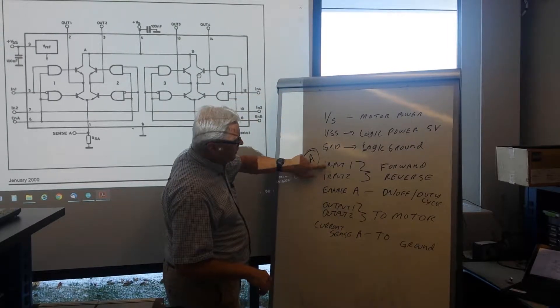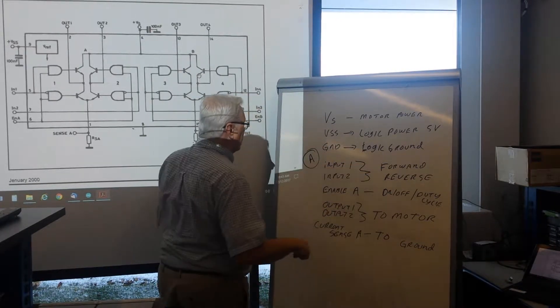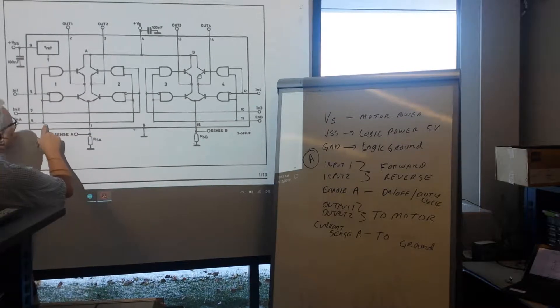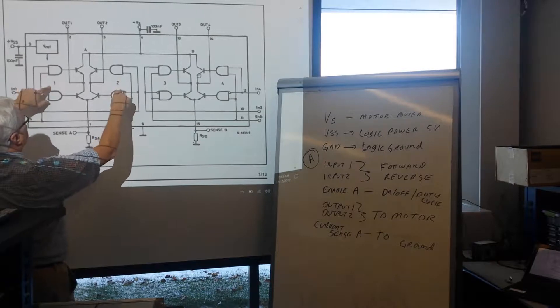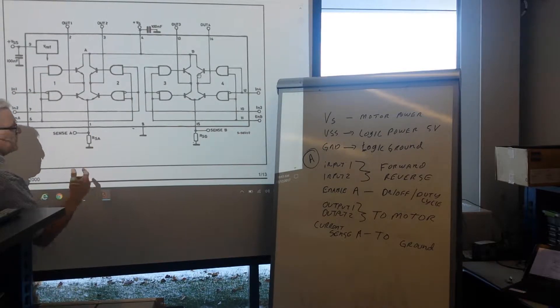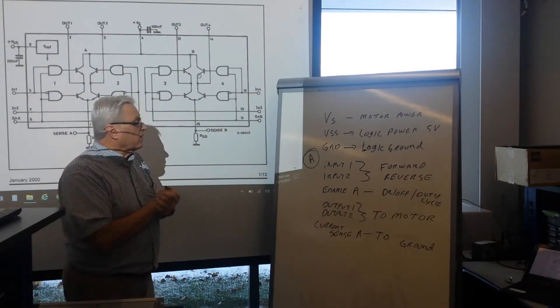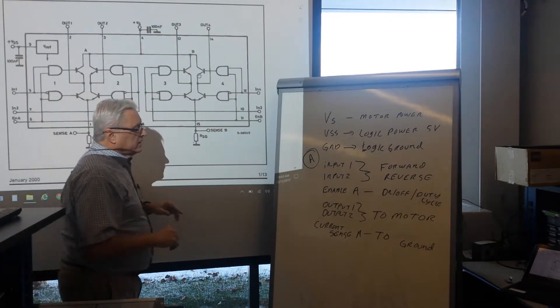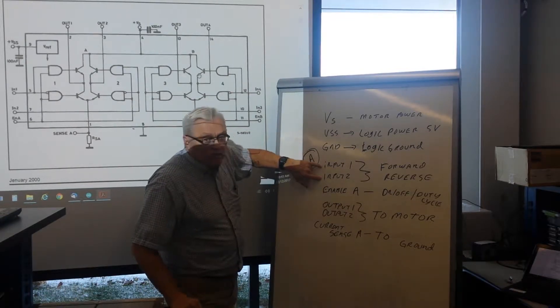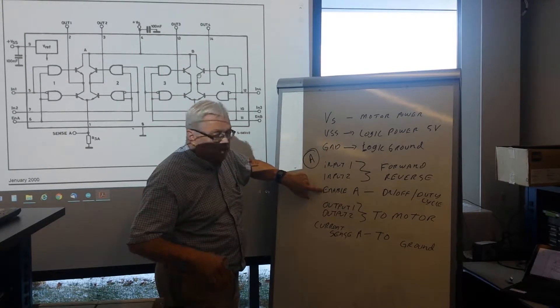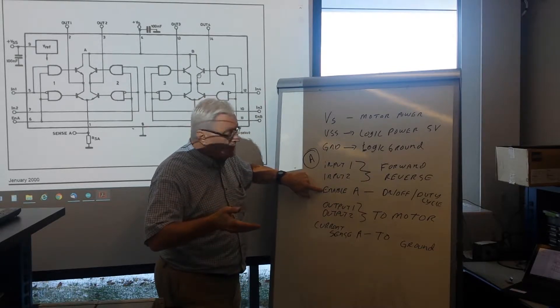So those are the inputs one, input two, so depending on which one you turn on, the motor will go forward or reverse. Then there's this enable pin, which goes to both of the sides. And when enable is turned on, the motor runs. When enable is turned off, the motor's off. So what you'll do is you will set either input one or input two high to pick your direction, and then you can use the enable as your duty cycle, turning it on and off to control the speed.